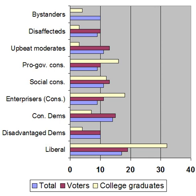Modern American liberalism aims at the preservation and extension of human, social and civil rights as well as the government-guaranteed provision of positive rights. It combines social progressivism and, to some extent, ordoliberalism, and is highly similar to European social liberalism. American conservatism commonly refers to a combination of economic liberalism and libertarianism, and social conservatism. It aims at protecting the concepts of small government and individual liberty, while promoting traditional values on some social issues.